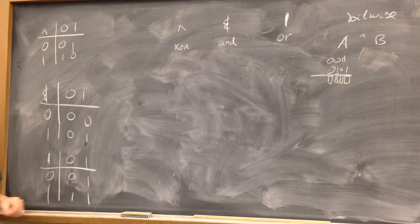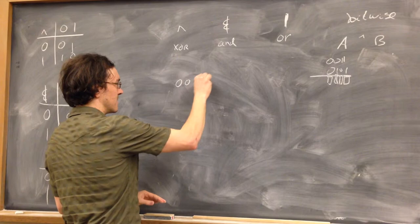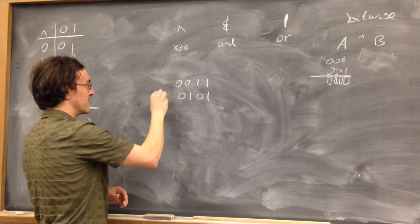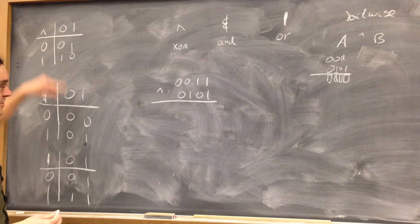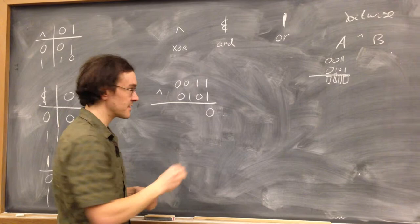So if we have this number and this number and we exclusive OR them bitwise, we can just do it one at a time using the truth table. So these are both true, so the result is false. These are both true and this one is still false.